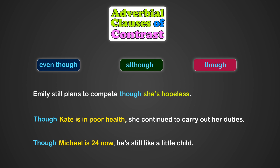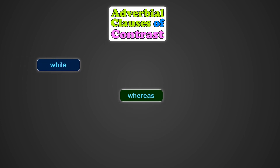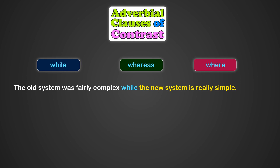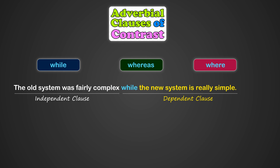Sometimes it occurs that not only do we want to contrast two things, but we also want to show that they are the opposite. For this reason, we can use three subordinate conjunctions interchangeably: 'while,' 'whereas,' and 'where.' For example: 'The old system was fairly complex, while the new system is really simple.' Here, the independent clause is the opposite of the dependent clause in terms of complexity.